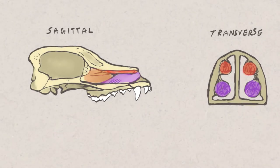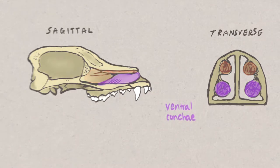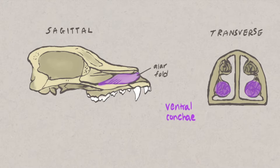The turbinates or conchi are grouped into dorsal, ventral and ethmoidal. The ventral conchi, which arise from the ventral part of the nasal cavity, end rostrally in the alar fold, which is a small cartilaginous swelling visible through the external nostrils.